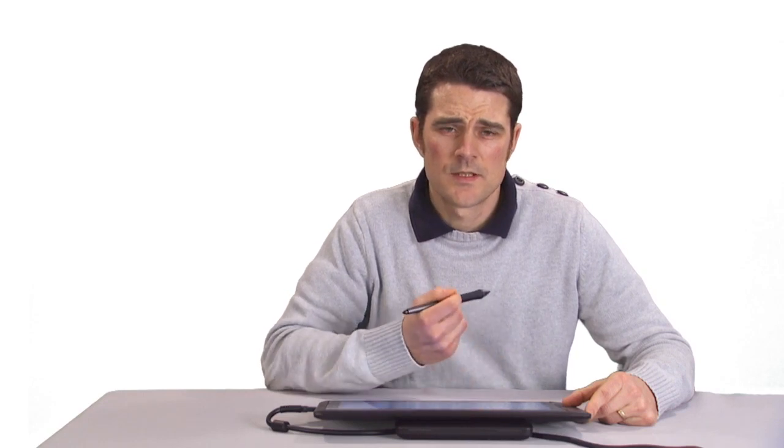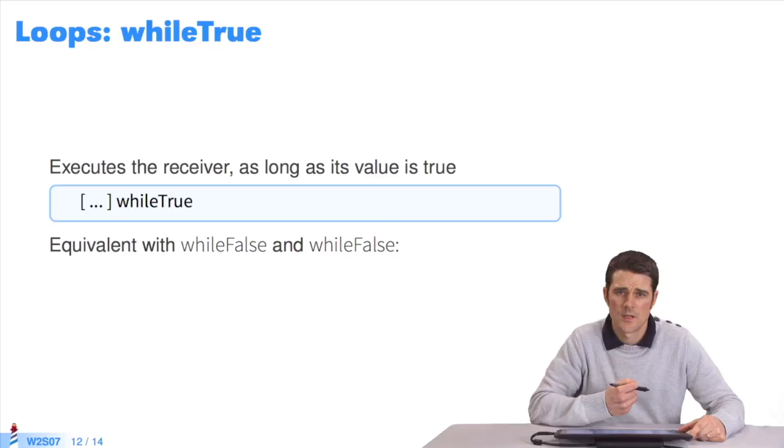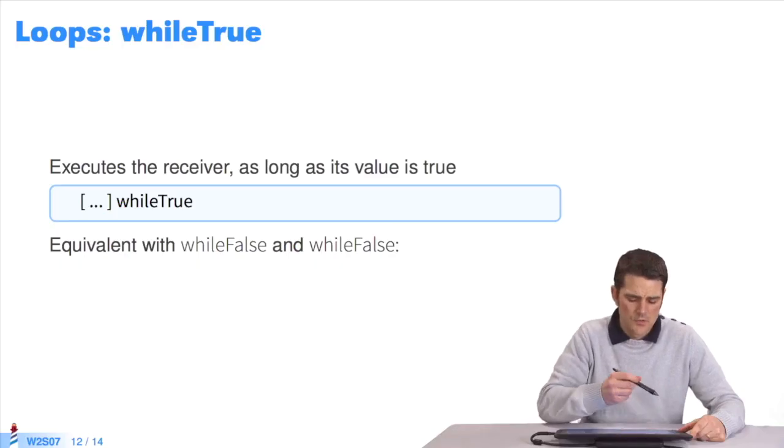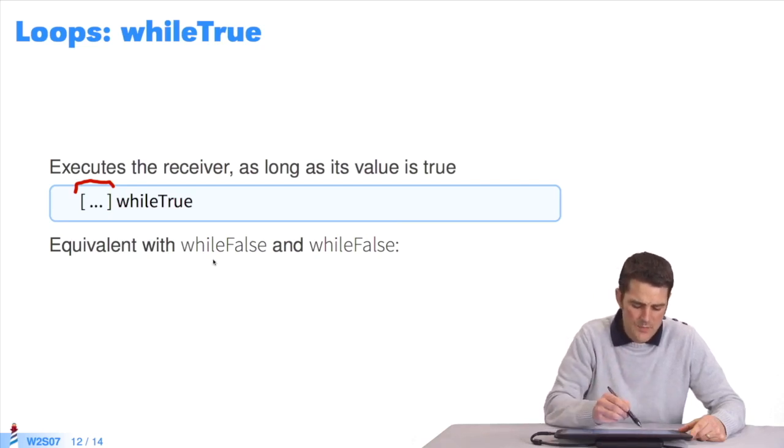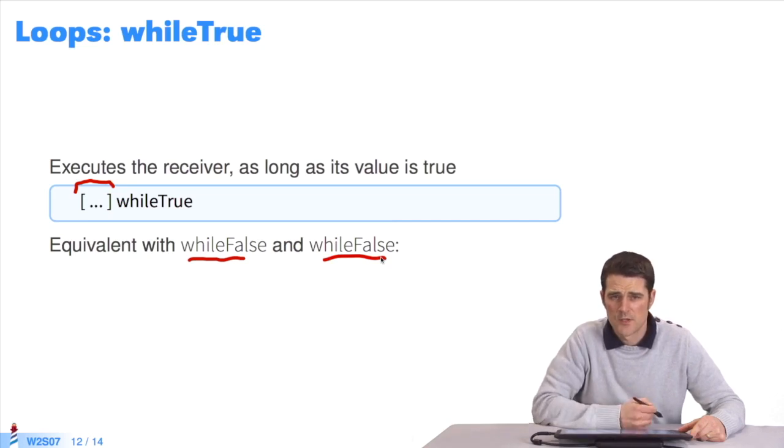There's another version of while true. It's the method while true without a parameter. It takes the receiver block and evaluates it. If it returns true or false, it is re-evaluated once more, and so on. You re-evaluate the block as long as its value is true. You have the twins of while true with the methods while false, with and without parameters. Every variation exists when it comes to classes and blocks.